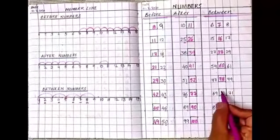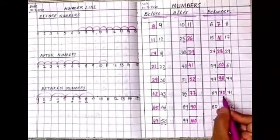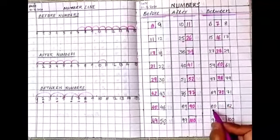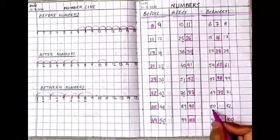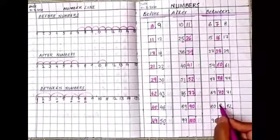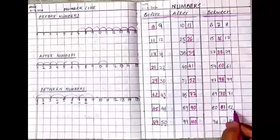69. After 69, 70. 70. 69, 70, 71. Okay. Write 80. Between 80 and 82, what is your between number? After 80, 81. 80, 81 and 82.